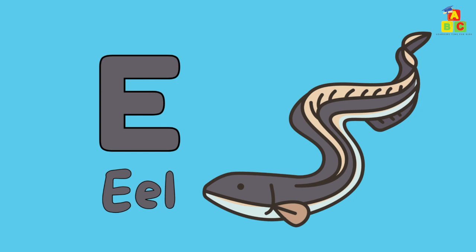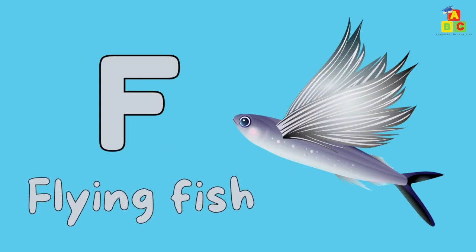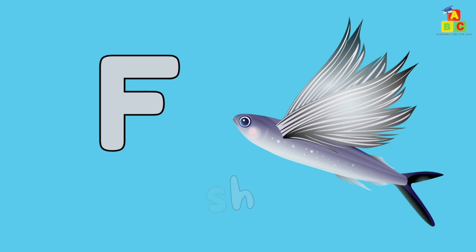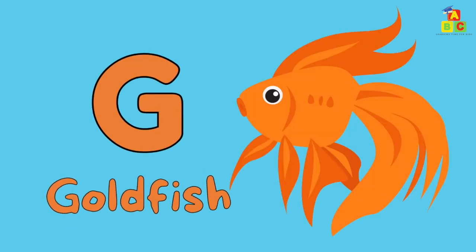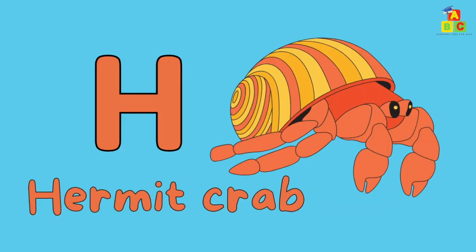E is for eel. F is for flying fish. G is for goldfish. H is for horseshoe crab.